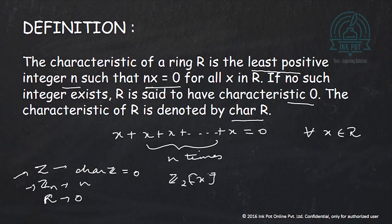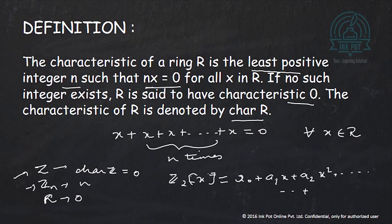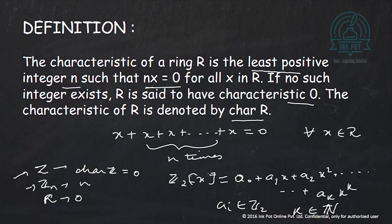The ring Z2[x] consists of all polynomials that have coefficients from Z2. That is, it consists of elements of the form a0 plus a1*x plus a2*x squared plus ... plus ak*x to the power k, where k belongs to the natural numbers and the ai's belong to Z2.